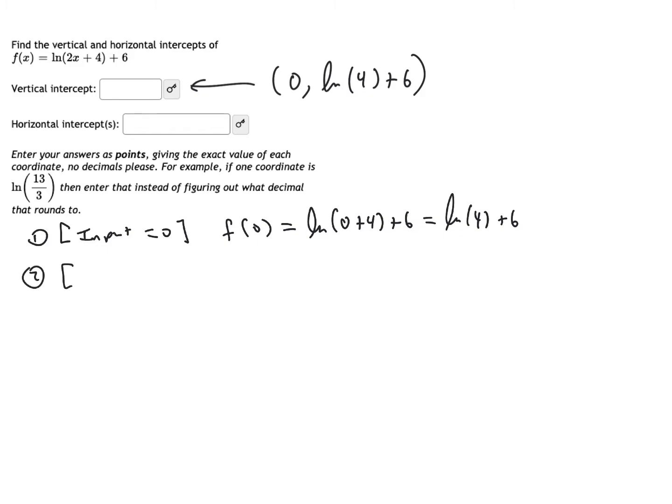To find the horizontal intercept, that's when I'm figuring out when my output is zero, and so that means I have to find the input.